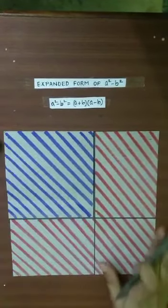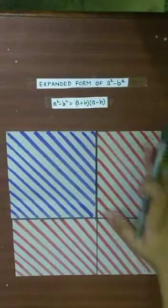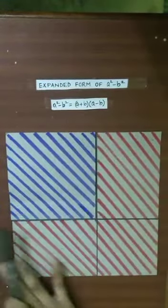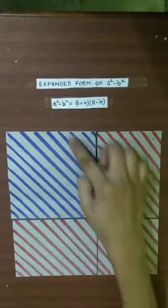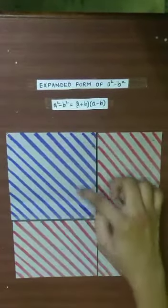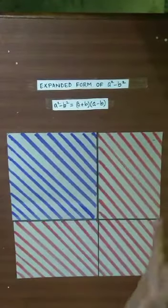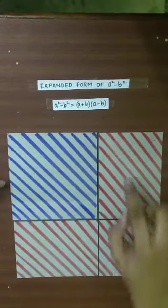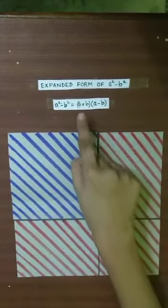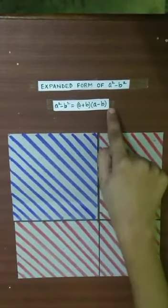So a² — that is the area of this entire square — minus the area of this smaller square: visually, that red area is supposed to be what we get as (a+b)(a-b). So today we are going to learn how to get it.